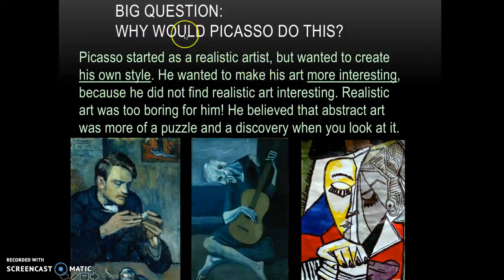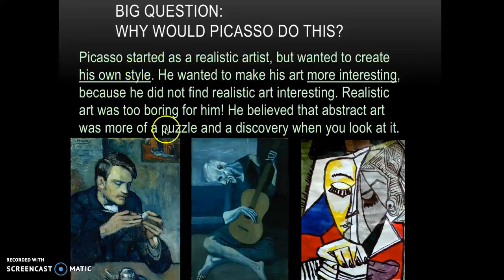So why would Picasso do this? Picasso really started as a realistic artist, but he wanted to create his own style. He wanted to make his art look more interesting because he did not find realistic art very interesting — he thought it was kind of boring, actually. He believed that abstract art was more like a puzzle or a discovery when you look at it.